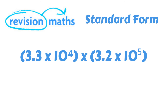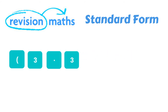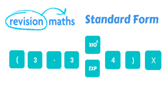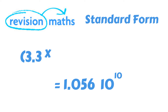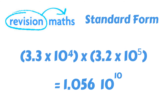Let's work out this example: open brackets 3.3 times 10 to the power of 4, close brackets, times open brackets 3.2 times 10 to the power of 5, close brackets. To calculate, we simply type the following into our scientific calculator. This equals 1.056 times 10 to the power of 10.